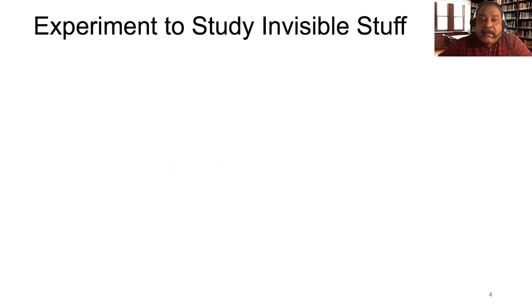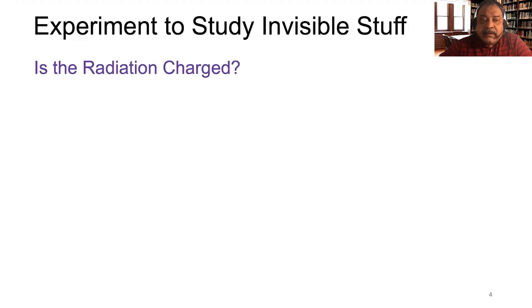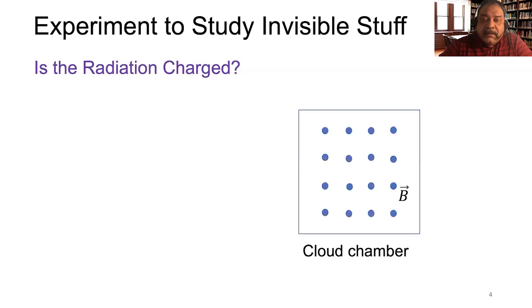With that in mind, we can create an experiment to study this invisible stuff. When we create an experiment, we always want to ask a question. Here's the question: is the radiation charged? We can use our cloud chamber, and since you've done magnetism in AP Physics, we can put a magnetic field on the cloud chamber. If we send the radiation through the magnetic field, and if it's charged, it will feel a force and get deflected.